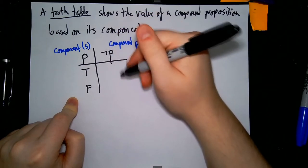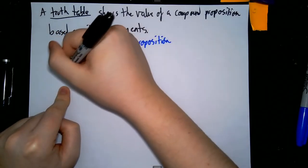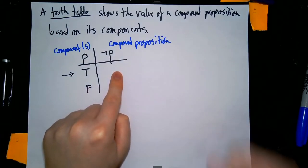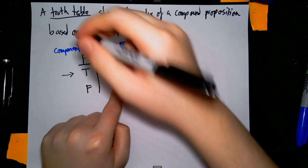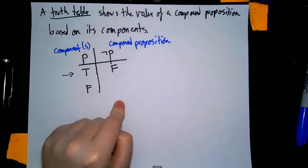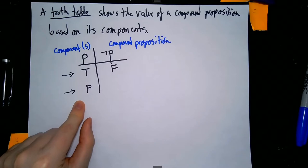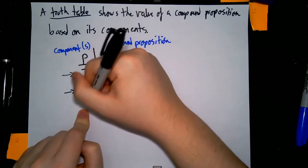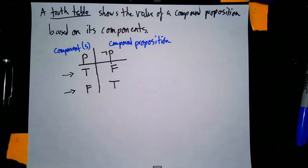For the negation of p: if p is a true proposition, the negation of p claims it is not the case that this true thing is true, which is itself not true — so the negation of p is false. If p is false, the negation of p claims it is not the case that p is true, which is indeed correct since p is false — so the negation of p is a true statement.